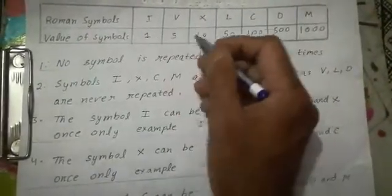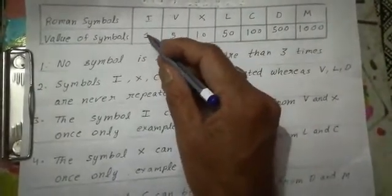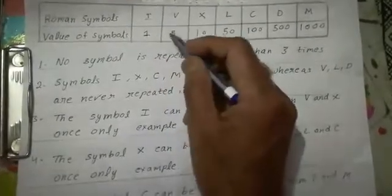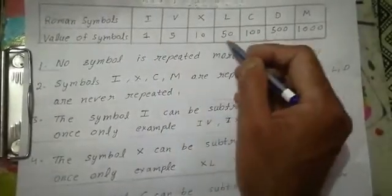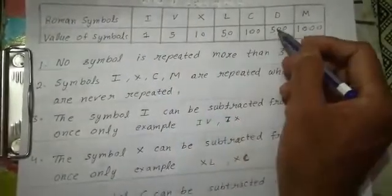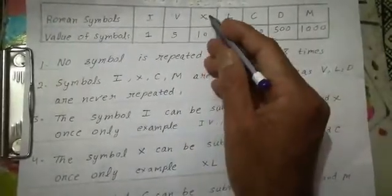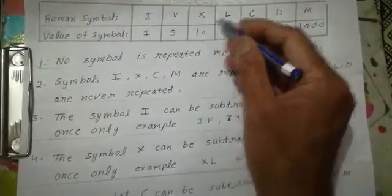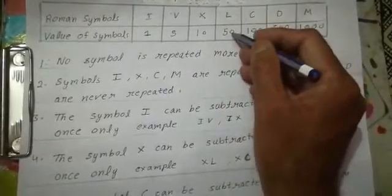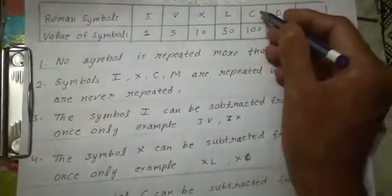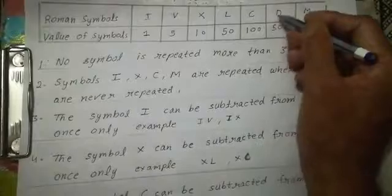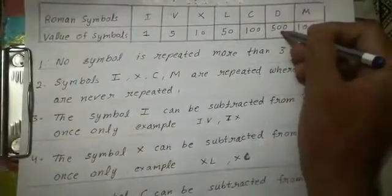Very easy to learn and remember. See here: 1, 5, again 1, 5, again 1, 5. In X, a 0 is added to 1 to make 10. In L, a 0 is added to 1 to make 50. In C, two 0s are added to make 100. In D, two 0s are added to make 500.